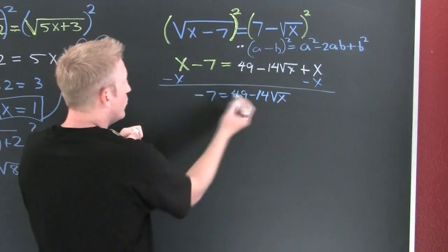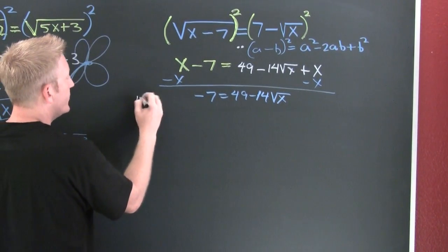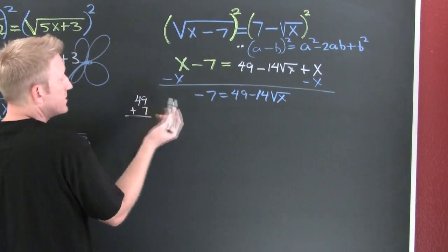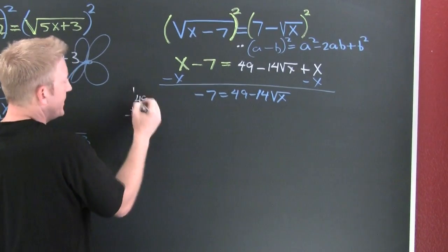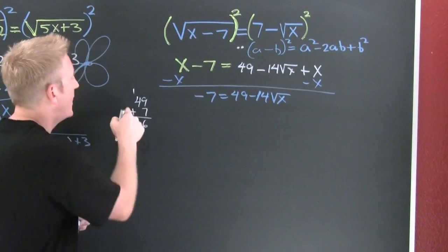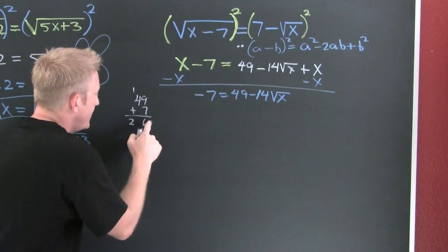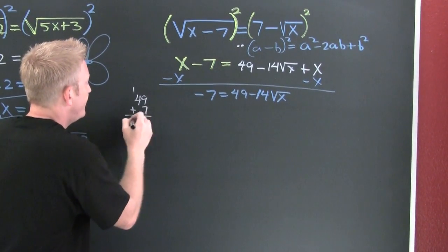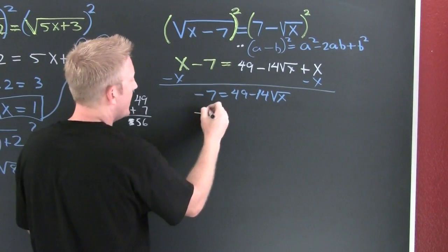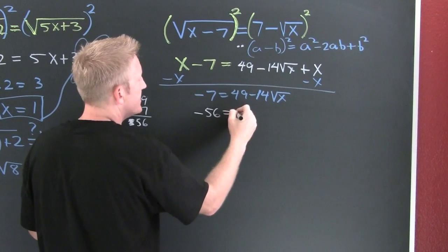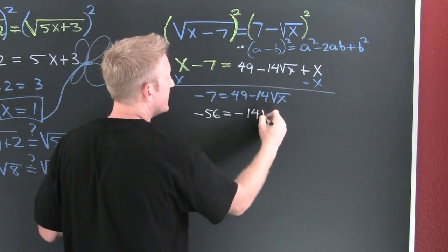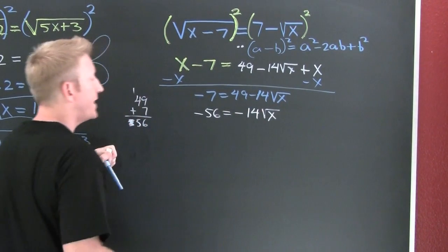Subtract off that 49. 49 plus 7, they have the same sign so I'm going to add them. I need to add, not multiply. 9 and 7 is 16, carry a 1, 56. Minus 56 is equal to minus 14 root x.